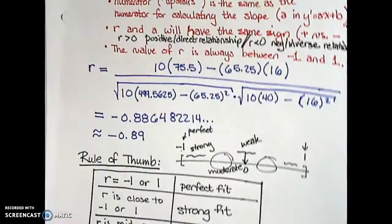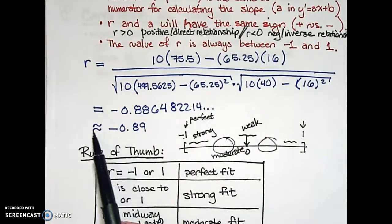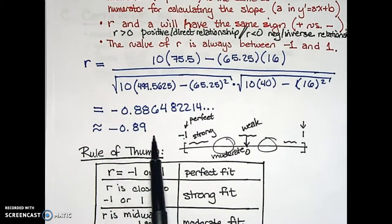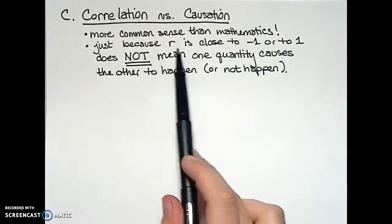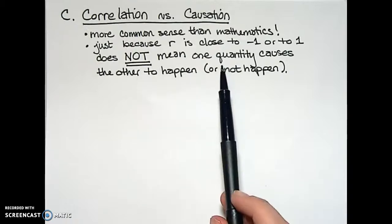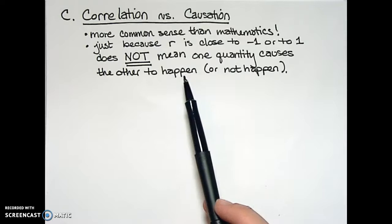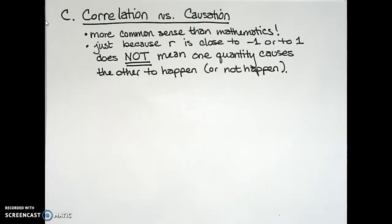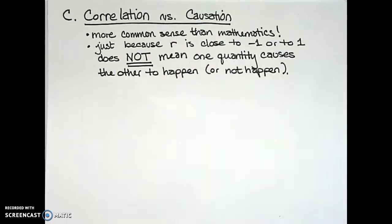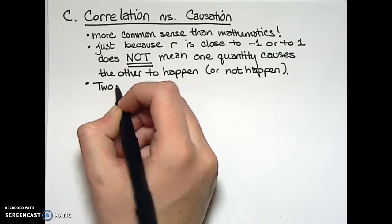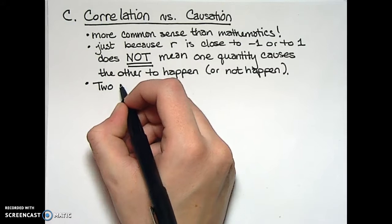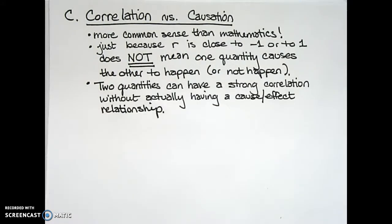In our specific example of hours of sleep and cups of coffee, r was equal to negative 0.89. Be careful: just because r is close to negative one does not mean that the number of hours of sleep causes you to drink a certain number of cups of coffee. Remember, r is the sample correlation coefficient — two quantities can have a strong correlation without sharing a cause-and-effect relationship. One scenario where this occurs is when both quantities are caused by some third external variable that wasn't measured.